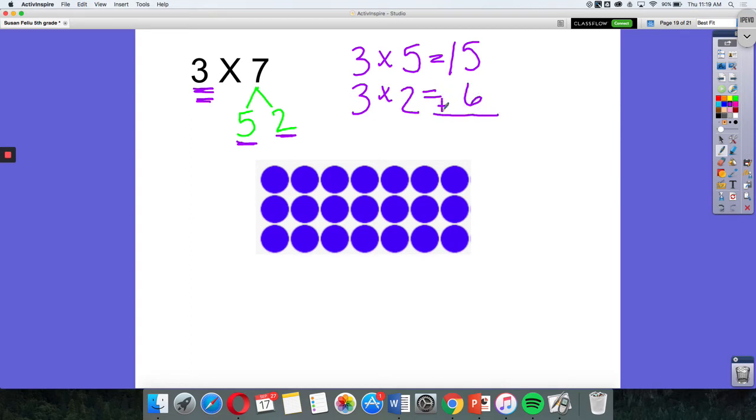And when I add up my partial products, I'm going to get 21. So let's take a look at the array we have here. You can see it represents 3 rows of 7.